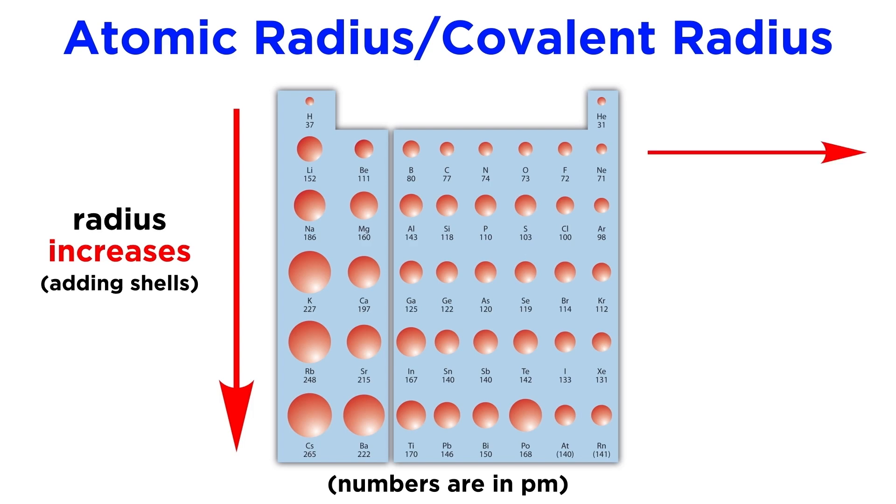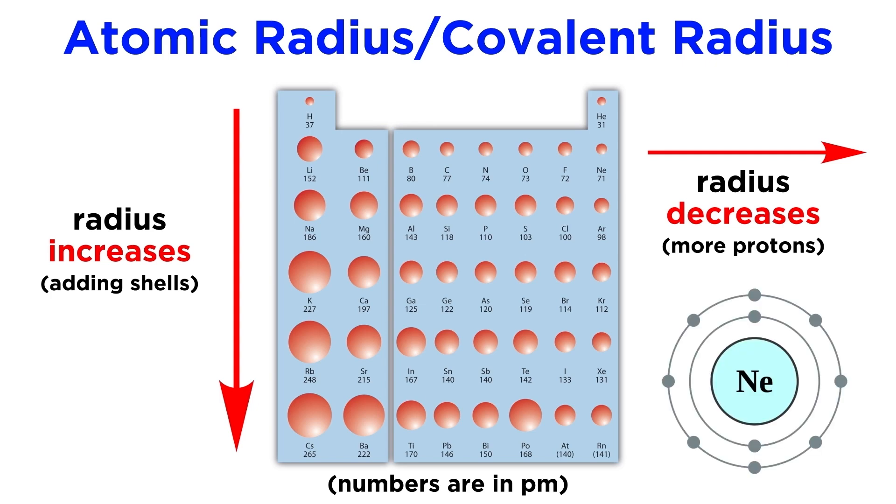But what about moving horizontally on the table? Generally, as we move to the right along a period, the covalent radius will decrease slightly. This may seem counterintuitive, as the addition of electrons doesn't seem like it should result in a smaller radius, but we must realize that as we move to the right, we are also adding protons, given that the atomic number is increasing, and the more protons there are in the nucleus, the greater the electromagnetic attraction that will pull the electrons in the existing shells a bit closer to the nucleus.